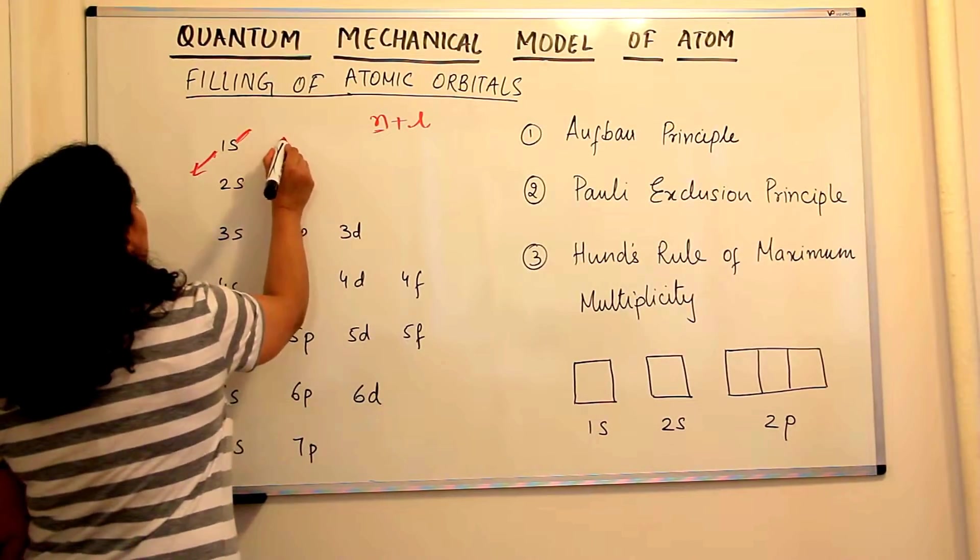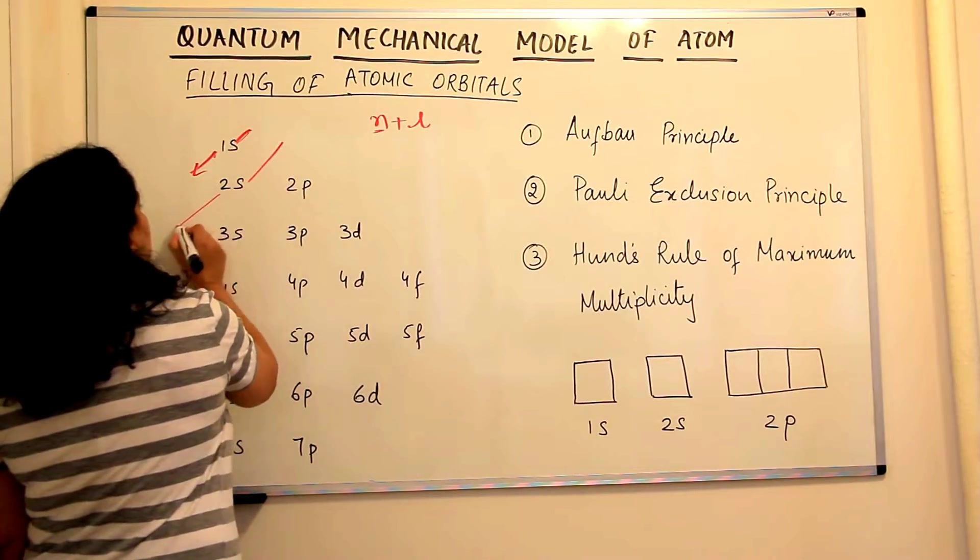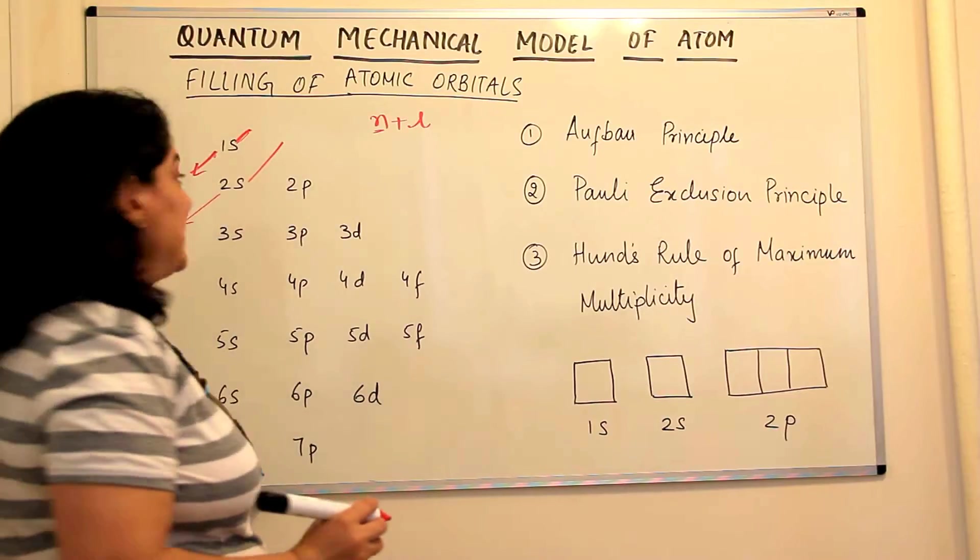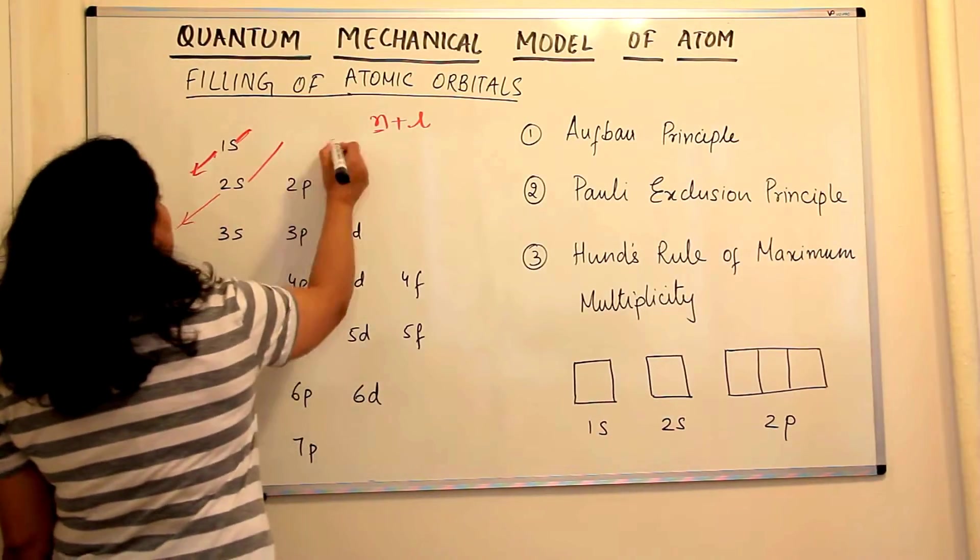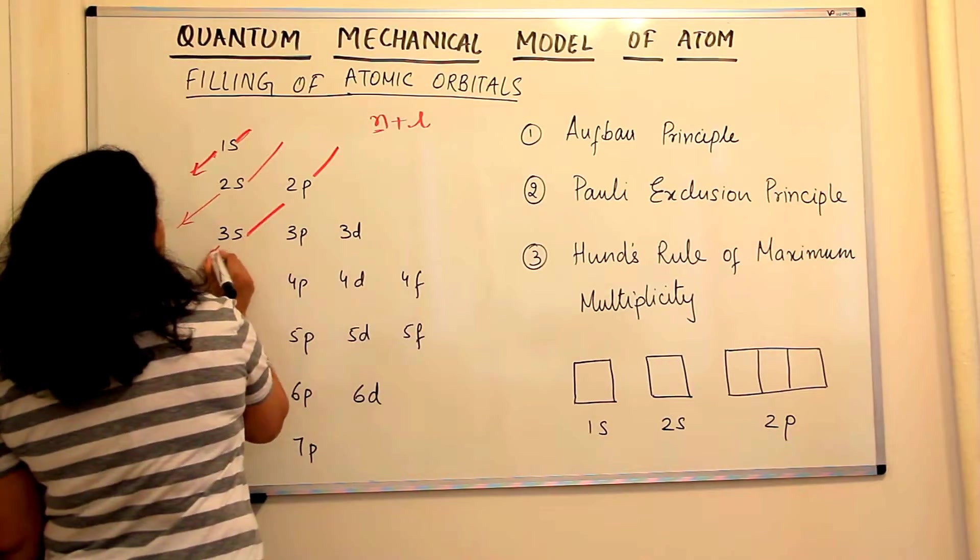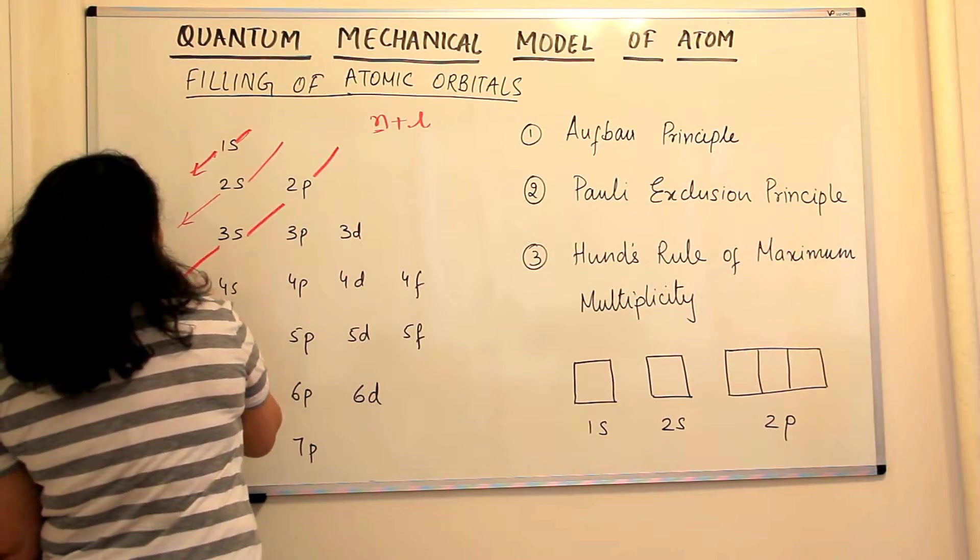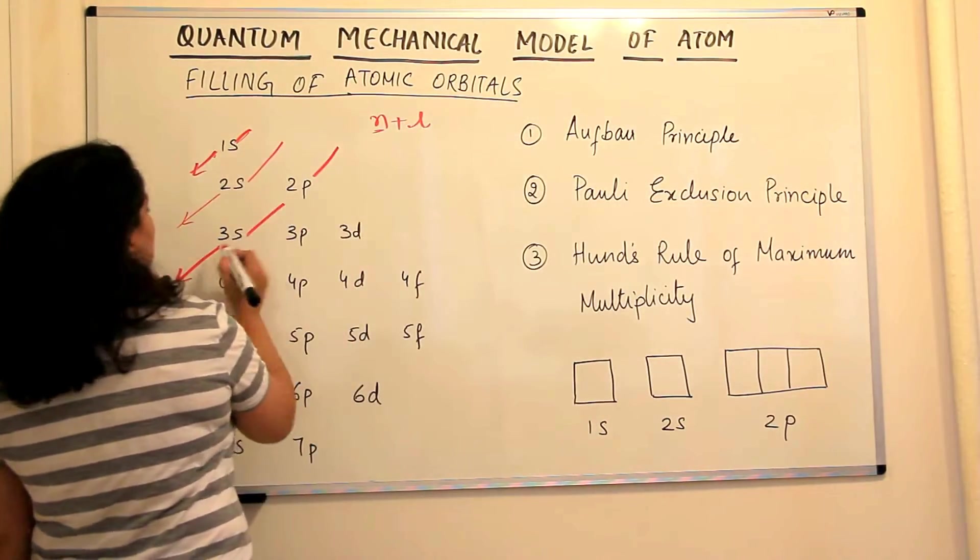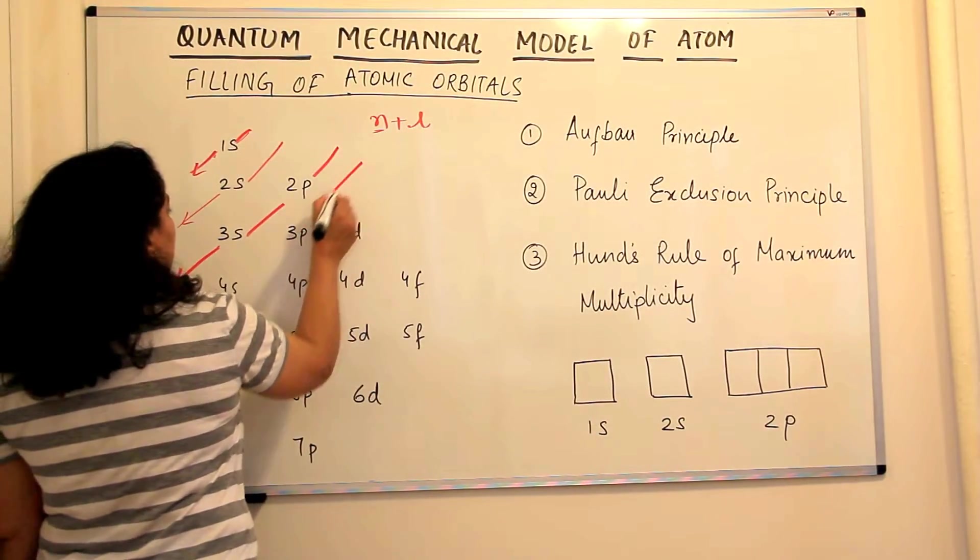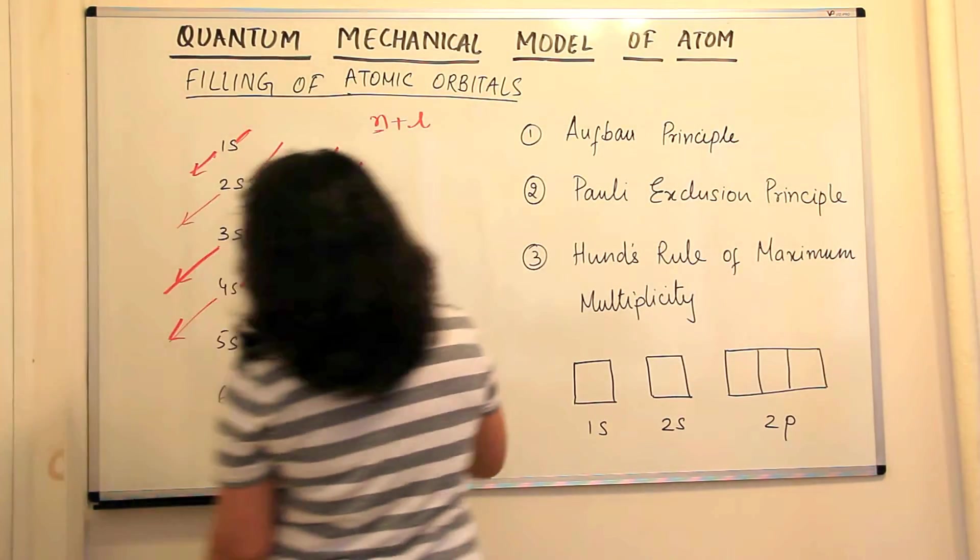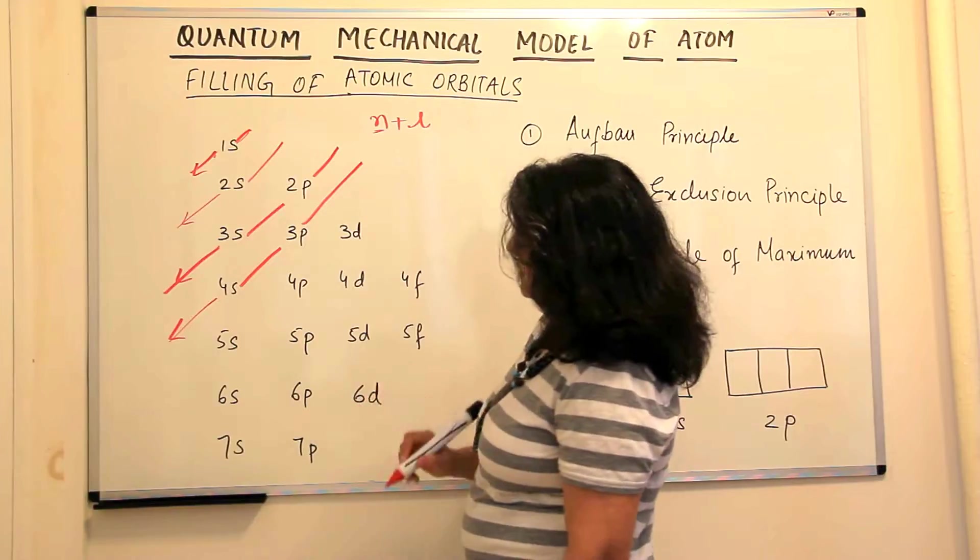After the 1s orbital, it is the 2s orbital which fills up. So the next is 2s. Then after this, trace it up, 2p, 3s, we make diagonal lines. And it is the 3s, 2p, 3s. Then after 3s, it is the 3p orbital, 4s orbital that fills up. 3p, 4s.